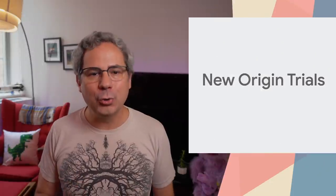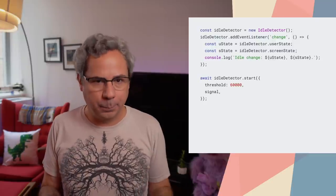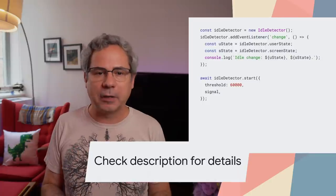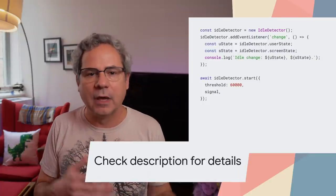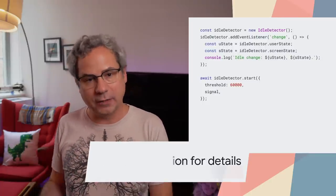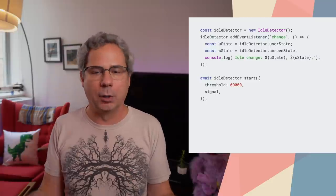There are two new origin trials that I want to call out. The idle detection API notifies you when a user is idle — potentially they're away from their computer. This is great for things like chat applications or social networking sites to let users know if their contacts are available or not.